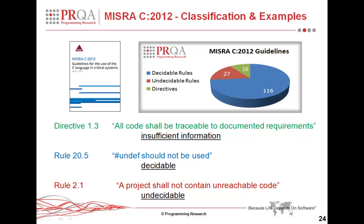Let's look at an example of a directive — Directive 1.3: all code shall be traceable to documented requirements. In this case, there is insufficient information for a static analyzer to provide an answer. One common misconception about undecidability is that it could be due to lack of information. Instead, when there is lack of information, whether a certain guideline is decidable or undecidable doesn't even come into question. So, in this case, it's a directive and user review is needed.